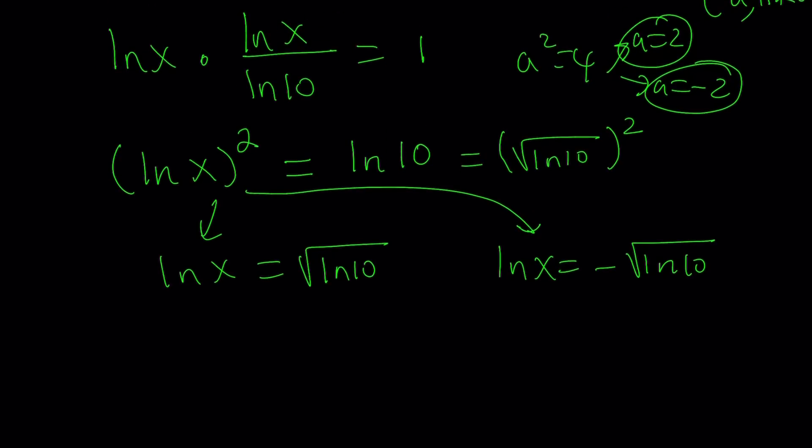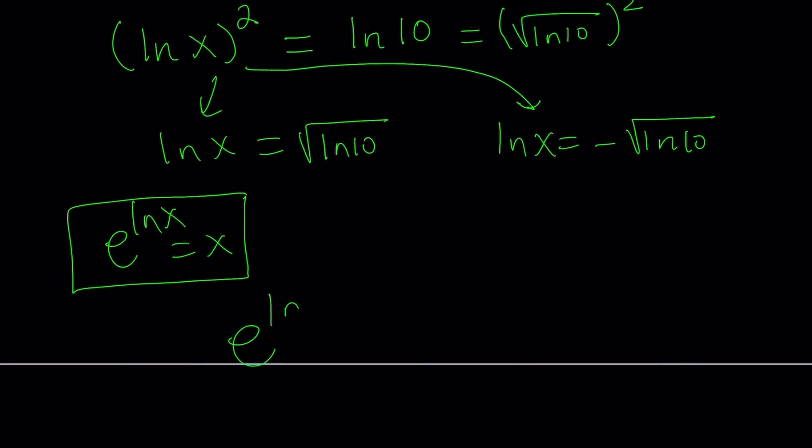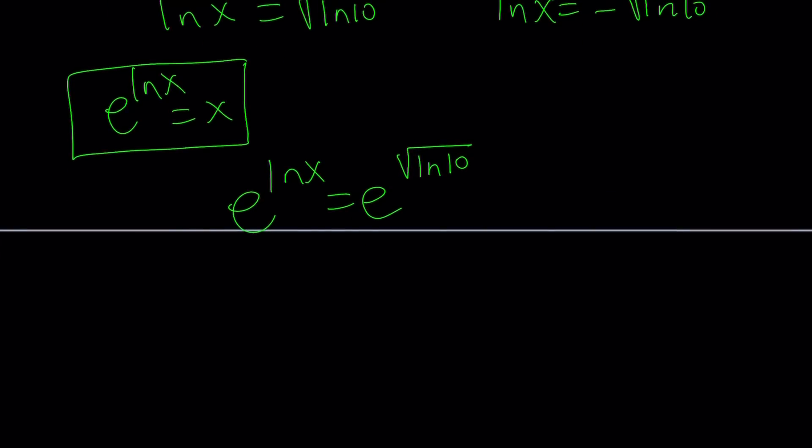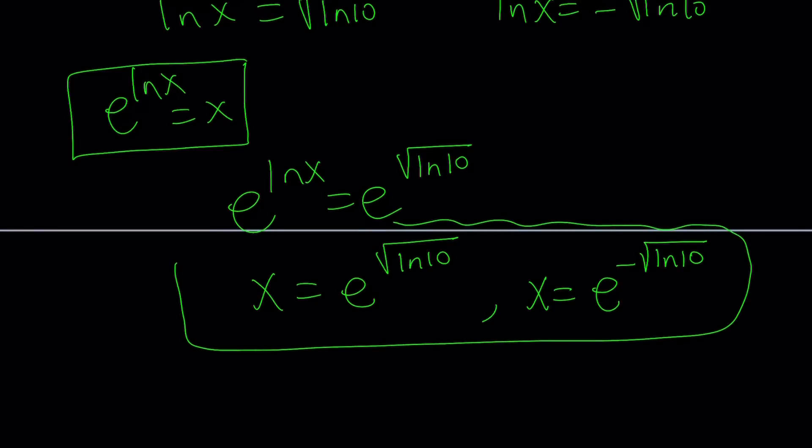Now we got ln x, but we do need x. So what should we do? We should do e to the power both sides, because we should all know that e to the power ln x is equal to x. This is a very important relationship between x and ln x. So we can do e to the power ln x equals e to the power square root of ln 10. And e to the power ln x can be written as x. So x equals e to the power square root of ln 10 is one of the solutions. And similarly, the other solution is going to be x equals e to the power negative square root of ln 10.